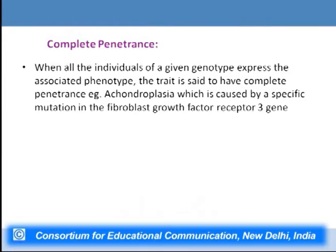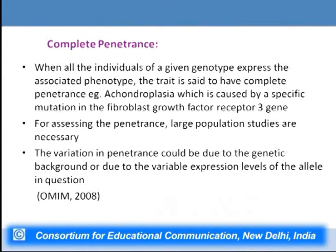As opposed to incomplete penetrance, completely penetrant genes are those expressed fully in all individuals who harbor the gene. An example is achondroplasia, a defect caused by a specific mutation in the fibroblast growth factor receptor 3 gene, found in all individuals who harbor this particular mutant gene. For assessing penetrance, a large sample of population must be surveyed.